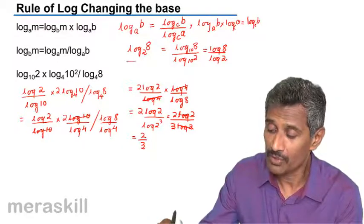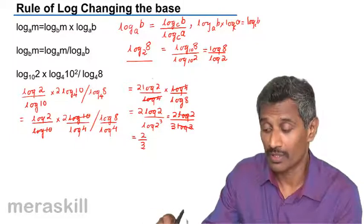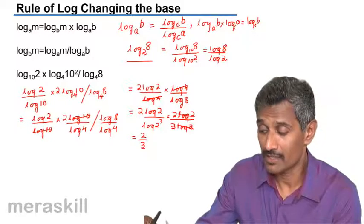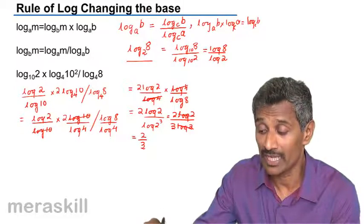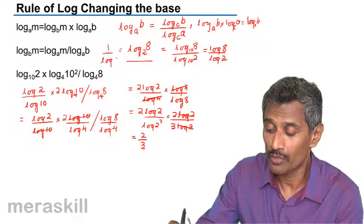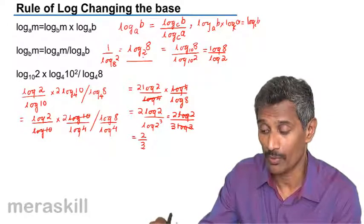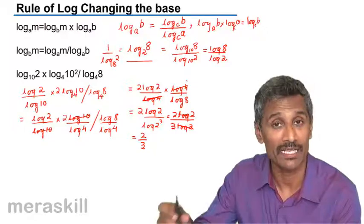Often we will come across usage of this particular rule: that log 8 to the base 2 can be written as log 8 upon log 2. Another way of writing this is, remember, you can even write this as 1 upon log 2 to the base 8. Remember how when the power and base interchange, then they have got a reciprocal relationship as we did in the previous rules.